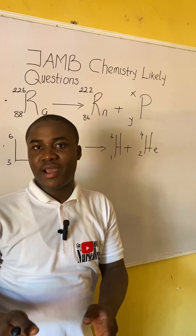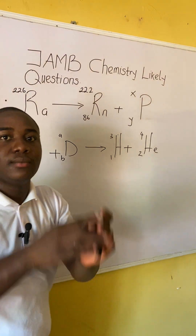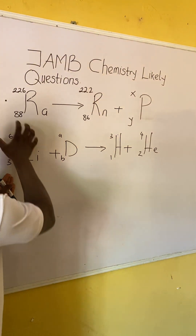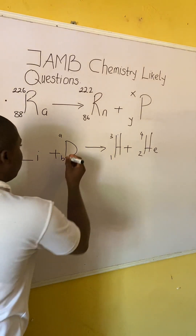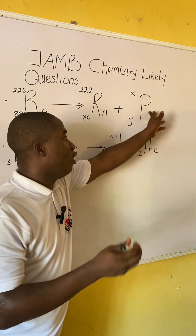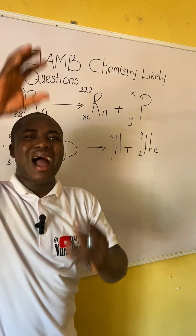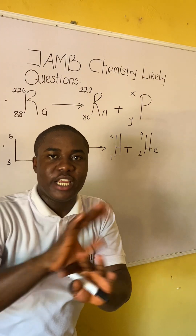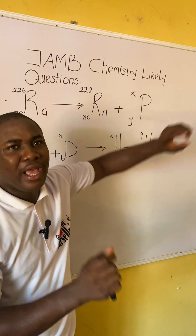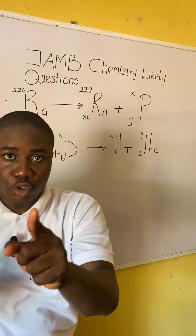Here is your own practice question — solve it and provide the answer in the comment section. You can see they said Ra-226-88 was disintegrated to get an unknown substance — that unknown is what you are looking for. Similarly, there is a lithium reaction with an unknown. For each question, tell me what x, y, a, b represent. Do not change the symbols given.